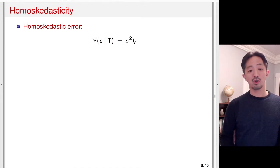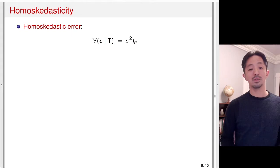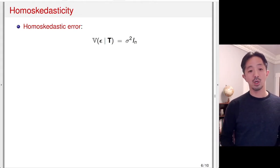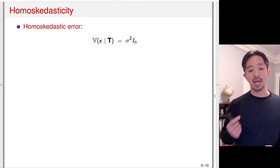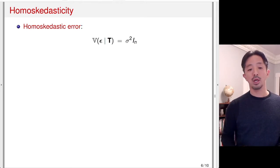The variance-covariance matrix, which is an n-by-n matrix, can be written as sigma squared — a scalar — times the identity matrix of n dimensions. So every error term epsilon_i has the same variance sigma squared, regardless of its treatment status.